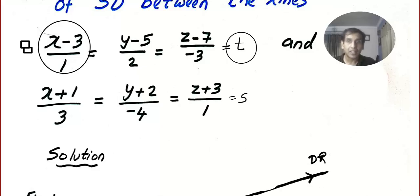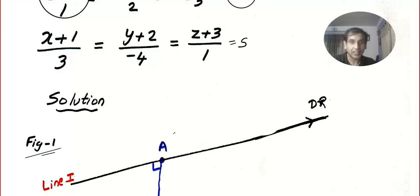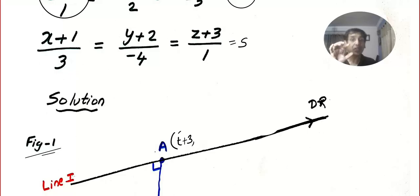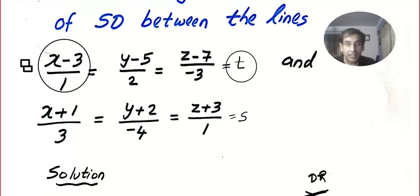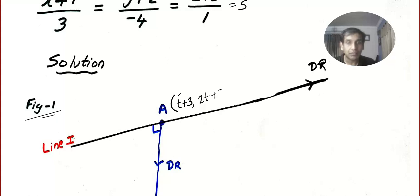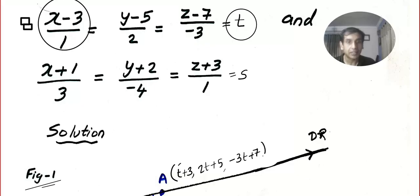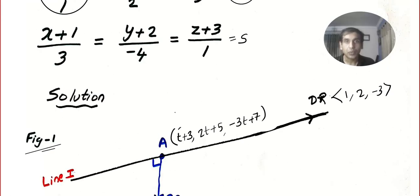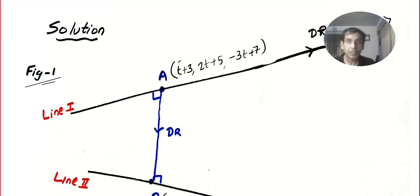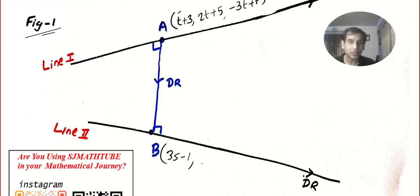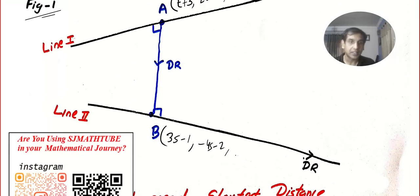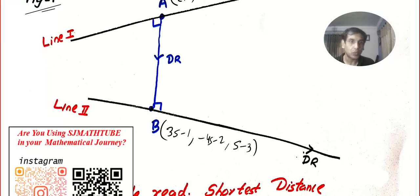The parametric form of Line 1 is: x = t + 3, y = 2t + 5, z = −3t + 7, with direction ratios 1, 2, −3. The parametric form of Line 2 is: x = 3s − 1, y = −4s − 2, z = s − 3, with direction ratios 3, −4, 1.